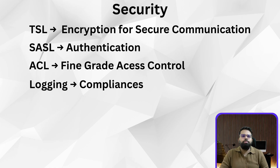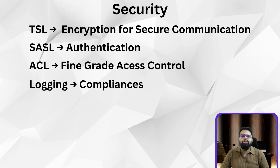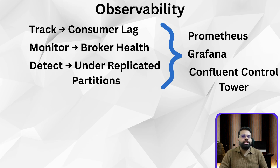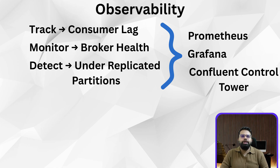What about security? Kafka offers TLS encryption for secure communication, SASL for authentication, ACLs for fine-grained access control, and audit logging for compliance. For observability, you can track consumer lag, monitor broker health, detect under-replicated partitions, and visualize everything with Prometheus, Grafana, or Confluent Control Center.